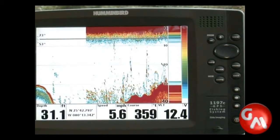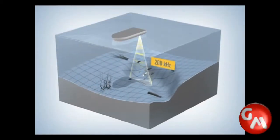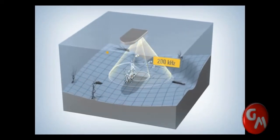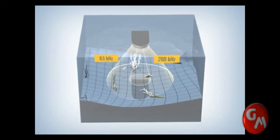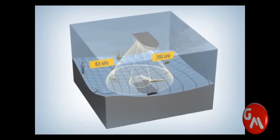Humminbird sonar uses various signal frequencies to help detect fish and structure. A higher frequency pulse provides more detailed and precise returns, while lower frequencies give a wider coverage area and deeper sonar penetration. Using these different beams gives you the best of both worlds: detailed readings and broad coverage areas.